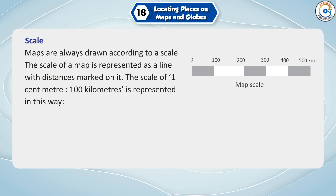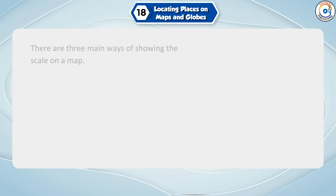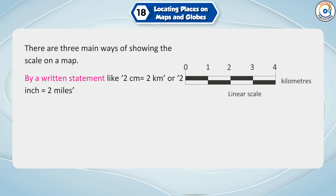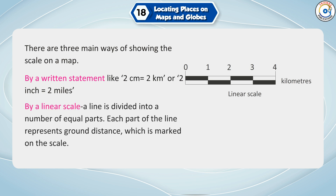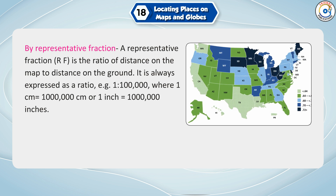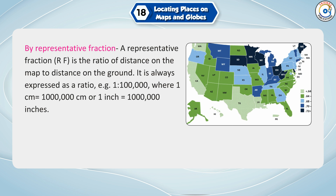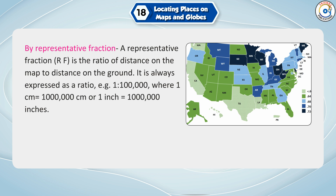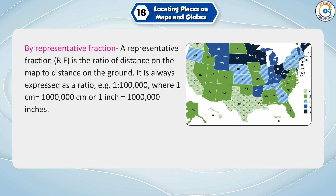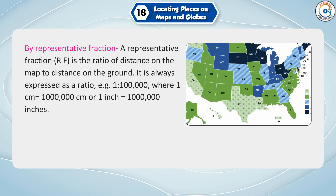Maps are always drawn according to a scale, represented as a line with distances marked on it. There are three main ways of showing the scale on a map: by a written statement like 2 cm equals 2 km or 2 inches equals 2 miles; by a linear scale, where a line is divided into equal parts each representing a ground distance; and by representative fraction (RF), which is the ratio of distance on the map to distance on the ground, expressed as a ratio such as 1:100,000.